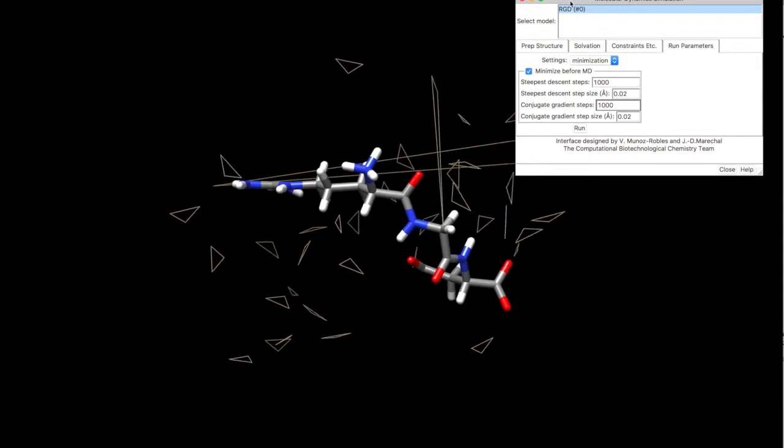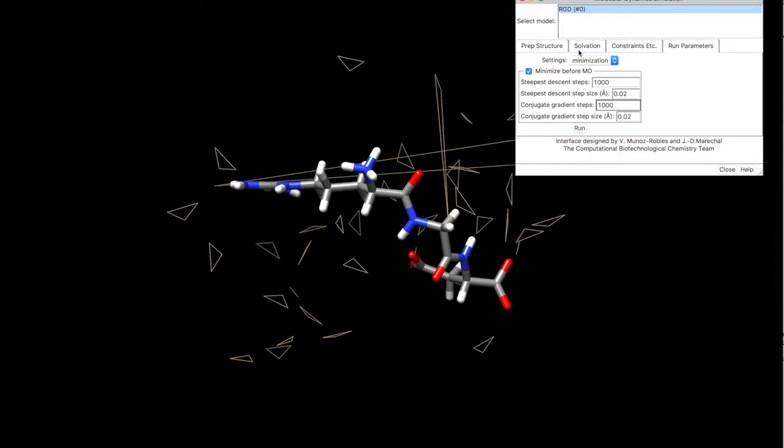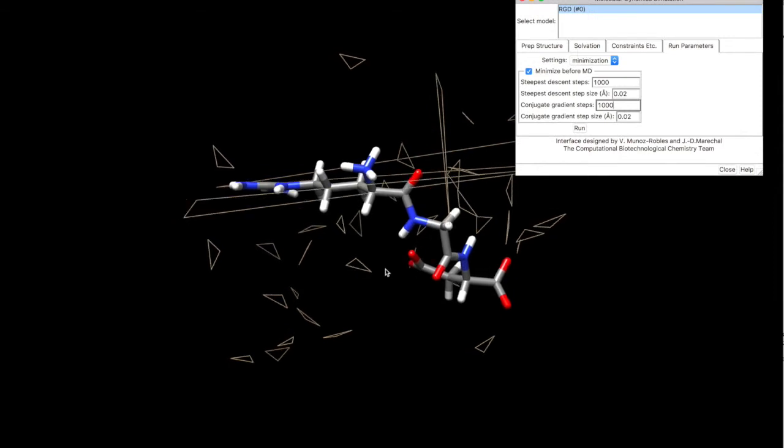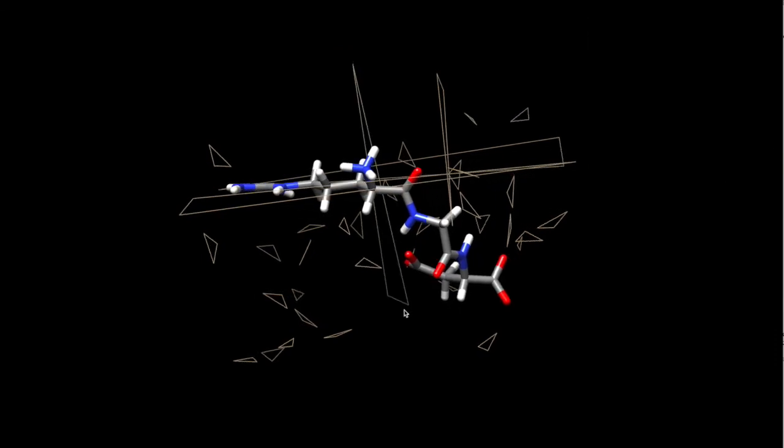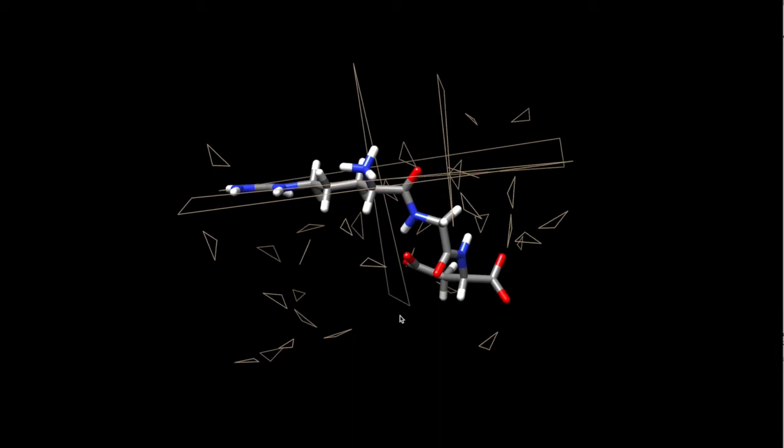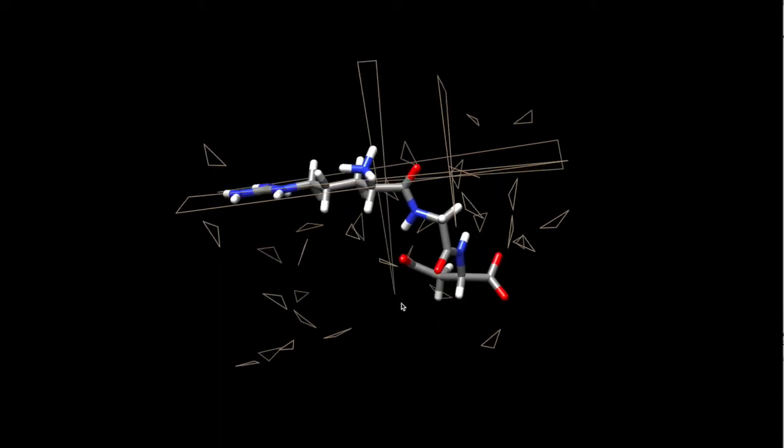Now, because of the periodic boundary conditions, you will see that these weird lines, so it means that molecules travel from this position to that position, and it looks like it's stretching too much.